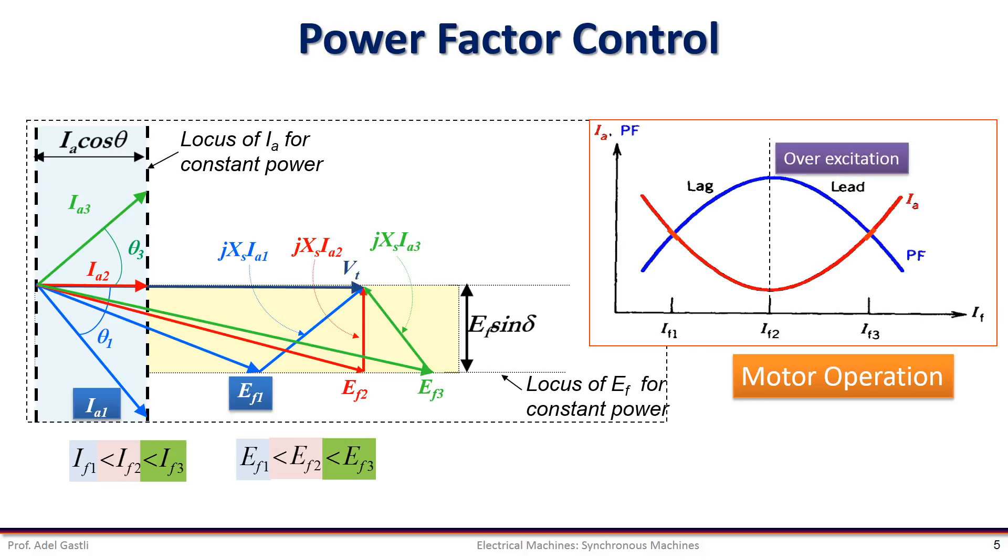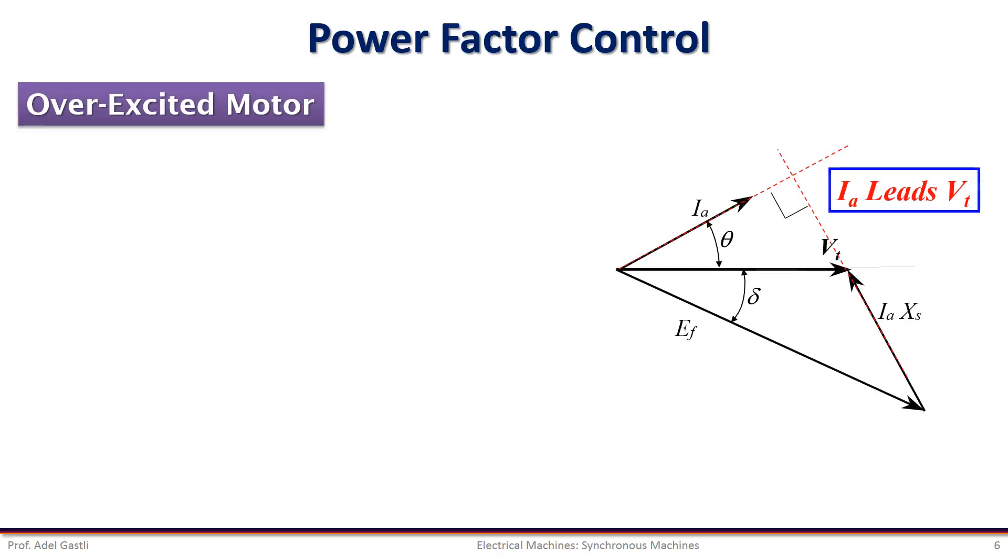The first one is over-excitation, that happens when the projection of EF on VT is bigger than VT. And the second one is under-excitation, that happens when the projection of EF on VT is smaller than VT.